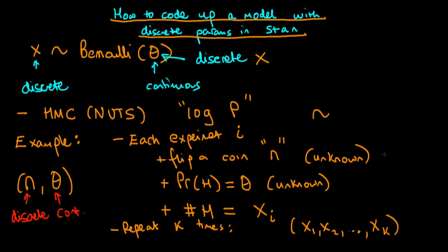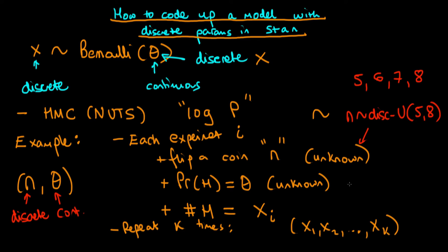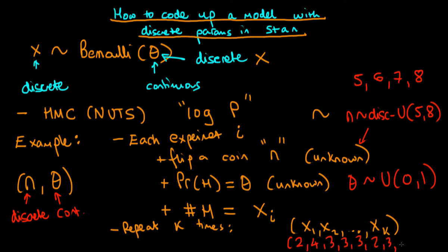I also need to specify the priors we're using on each of these parameters, and I'm going to use independent priors. Firstly, I'm going to assume that n follows a discrete uniform distribution between 5 and 8 — so n can be 5, 6, 7, or 8, each with equal probability of one quarter. Secondly, theta is a continuous uniform between 0 and 1. Finally, our particular data sample is going to be 2, 4, 3, 3, 3, 2, 3, 3, 4, 4.